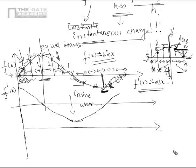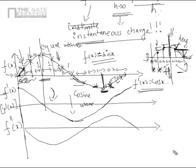Similarly, if we take the derivative of cos x, we get minus sin x. I call the derivative of f'(x) as f double dash of x — it is f' of f'(x), meaning we have differentiated twice.